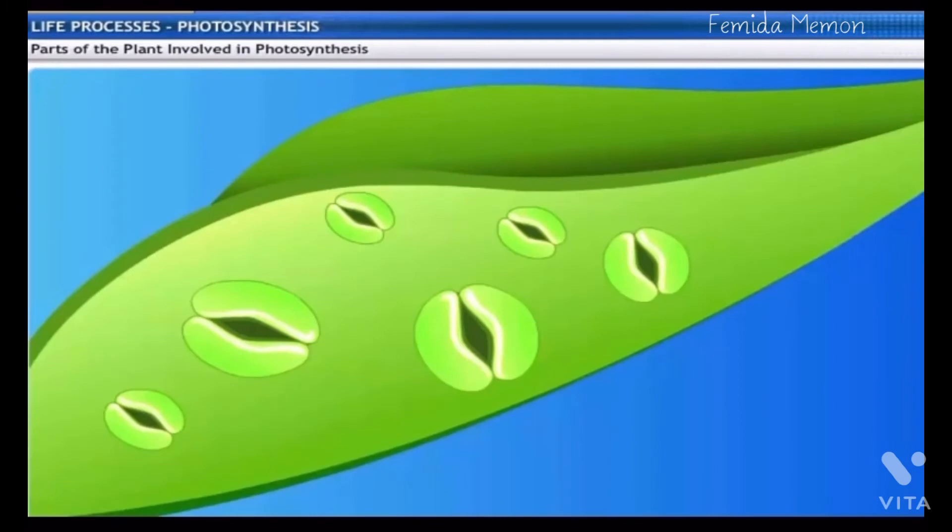Let's take a closer look at these stomata. If the stomata are open all the time, the plant may lose large amounts of water through them. To prevent this, the stomata are opened only when the plant needs carbon dioxide for photosynthesis. Stomata contain guard cells that regulate the opening and closing of stomata.